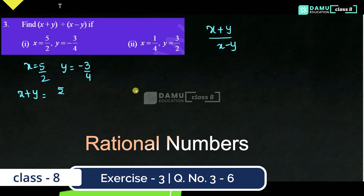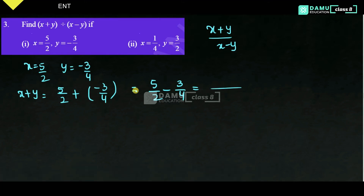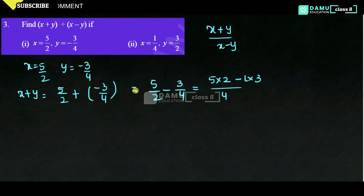So x plus y means 5 by 2 plus minus 3 by 4. Let us take LCM of 2 and 4. The least common multiple is 4. So we get 5 into 2 minus 1 into 3, that is 10 minus 3, which equals 7 by 4.